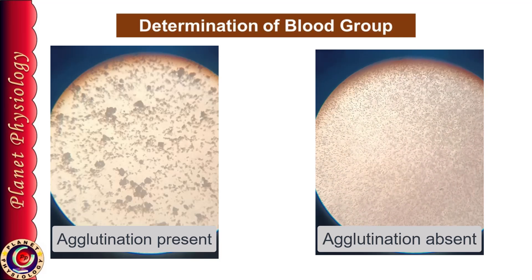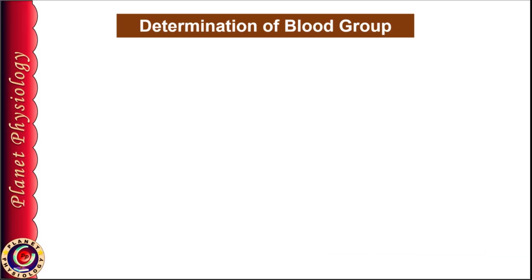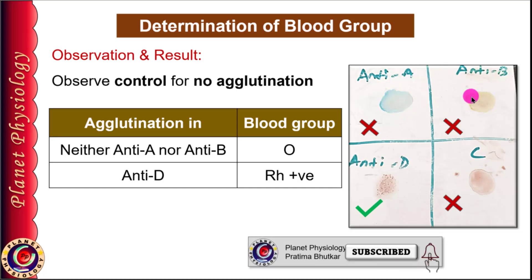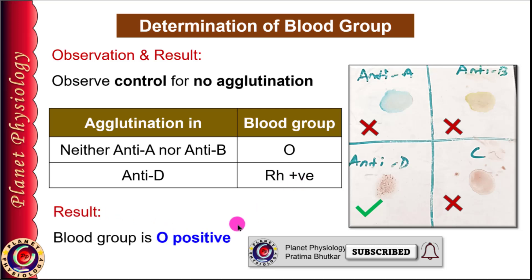Our observation for this sample is: agglutination in neither anti-A nor anti-B, indicating lack of agglutinogen A as well as agglutinogen B on the RBCs. Hence, the blood group is O. Agglutination reaction in anti-D indicates presence of agglutinogen D on the RBCs, and hence the blood group is Rh positive. Thus, the blood group of this individual is O positive.